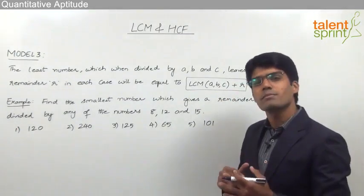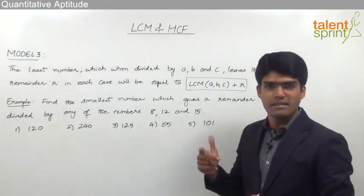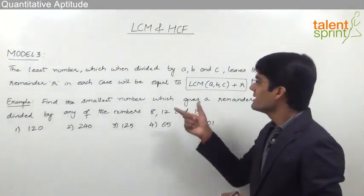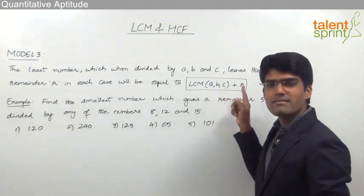So whenever we are supposed to find out a number which when divided by various other numbers will give the same remainder in each case, it can be taken as the LCM of those numbers plus the remainder.